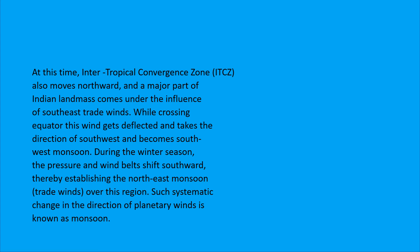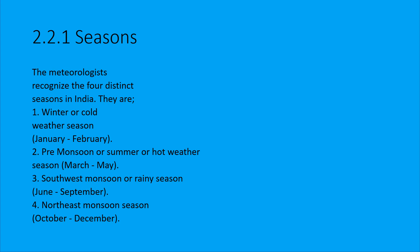The seasons of India are connected to the monsoon. India has a cold season, a hot weather season from March to May, and the South-West Monsoon rainy season from June to September.